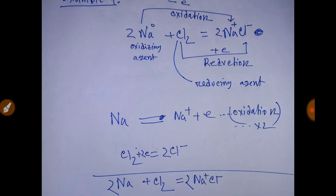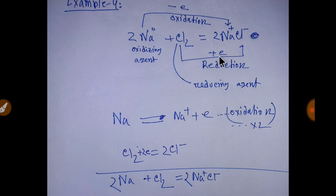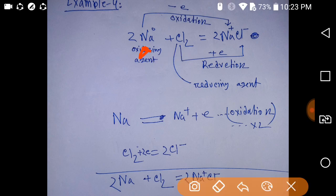This is our fourth example to show that oxidation and reduction occur simultaneously. Sodium plus chlorine gives sodium chloride. The oxidation state of sodium is zero but in sodium chloride it is +1, so an electron is lost — this is an oxidation process. The oxidation state of chlorine is zero but in sodium chloride it is −1, so one electron is gained — this is a reduction process. Chlorine is the oxidizing agent and sodium is the reducing agent.